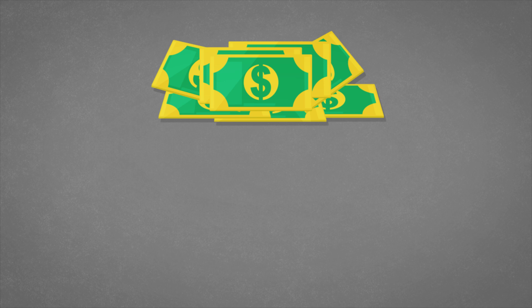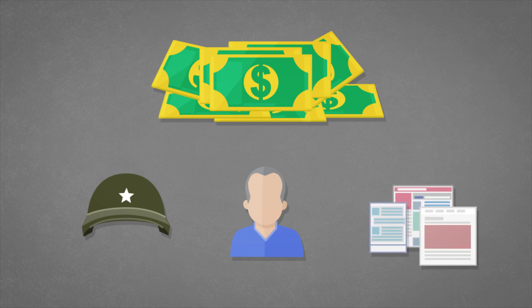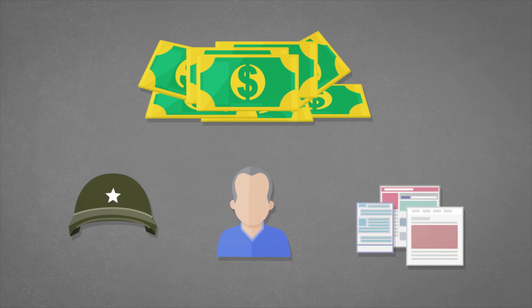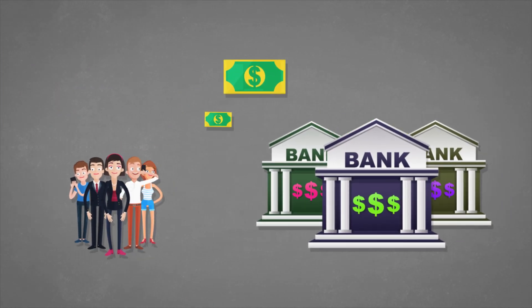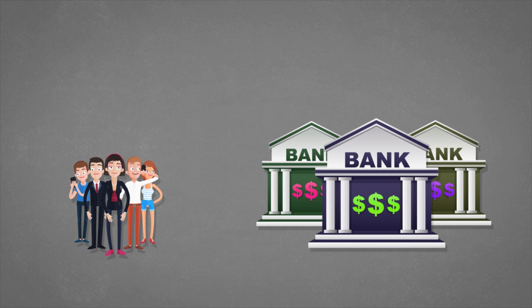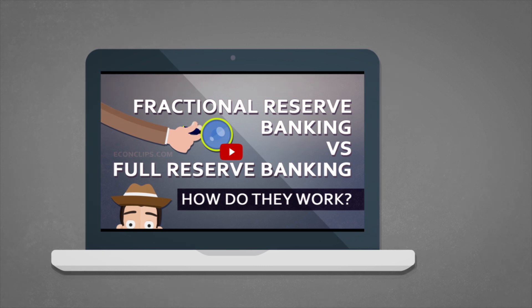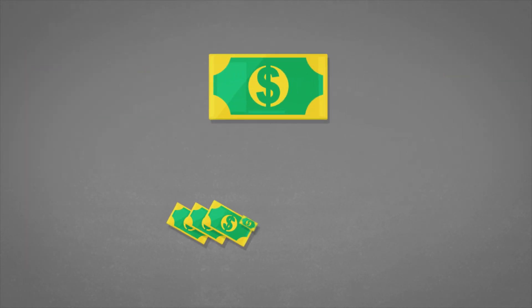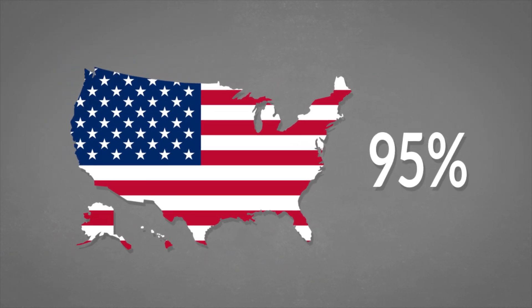The government still spends money on things like the military, pensions, social programs, and many other things, so the money is eventually received by the public one way or another. This money is then deposited by the public in commercial banks. As you already know from fractional reserve banking, in a process of lending to the public, commercial banks can in turn create even more money based on the newly deposited funds. About 95% of the U.S. money supply is created precisely in this way, rather than being issued directly by the government.